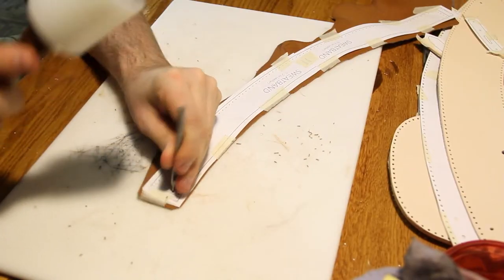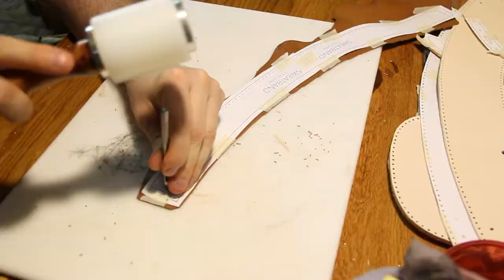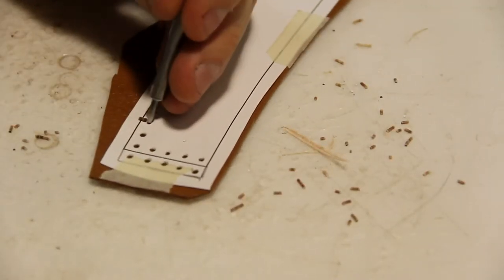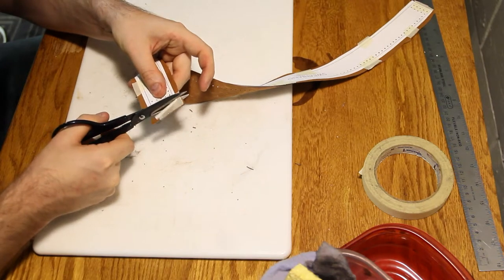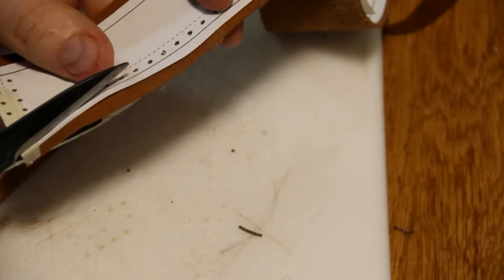For the sweatband, I'm using three to four ounce chrome tan leather. It's more flexible. I recommend using some shears on the chrome tan. It's a lot easier than trying to use an exacto knife.